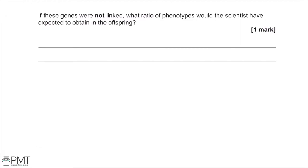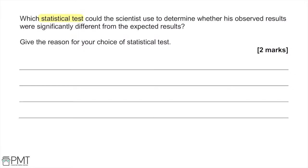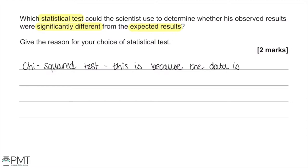If these genes were not linked, the scientist would have expected a ratio of 1:1:1:1, as there would be no crossing over, so no alternative gametes would be produced. The statistical test used would be a chi-squared test, because the data is nominal — it's in the form of frequencies in a number of categories. So we state the reasoning is that the data is categorical.